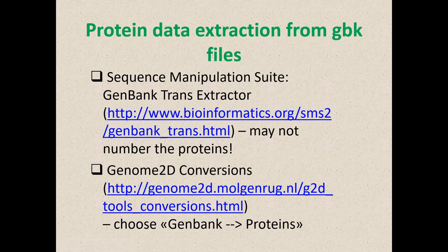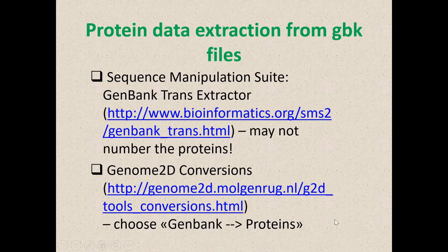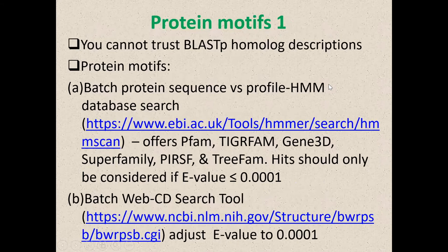Before committing to a BLAST homology hit, use other tools to confirm what your protein actually is. You need to extract from your GBK file the proteins encoded by your phage. The Genome2D conversion suite in the Netherlands is probably the best site — upload your GBK file, choose 'GenBank to proteins,' and it'll give you your proteins in FASTA format. Don't trust BLASTP hits alone — look for protein motifs.